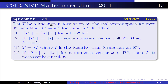The question is: let T be a linear transformation on a real vector space R^n over R such that T² = λT for some λ ∈ R. Option 1: ||Tx|| = |λ|·||x|| for all x ∈ R^n. Option 2: if ||Tx|| = ||x|| for some nonzero vector x ∈ R^n, then λ = ±1.